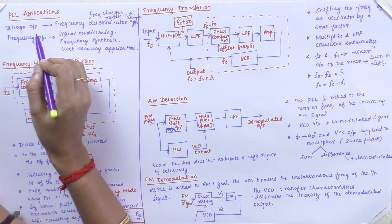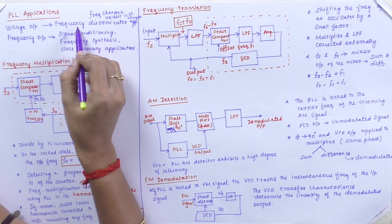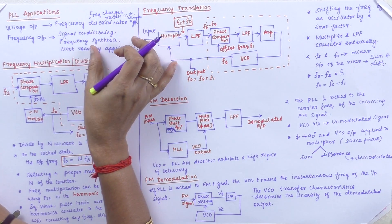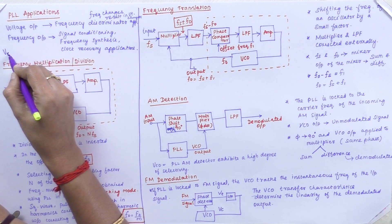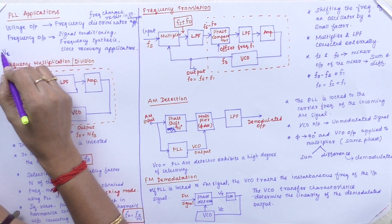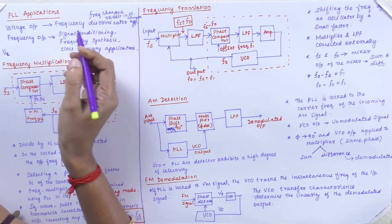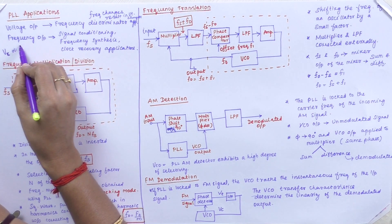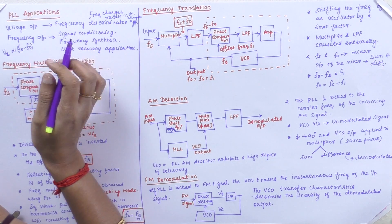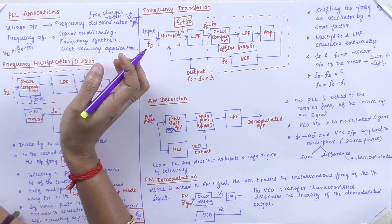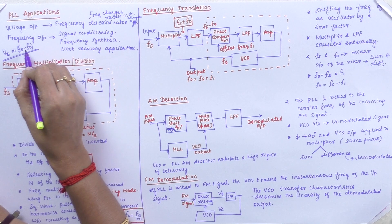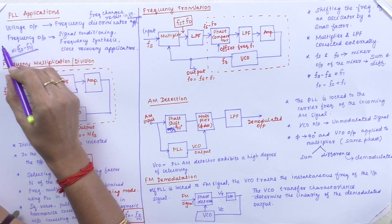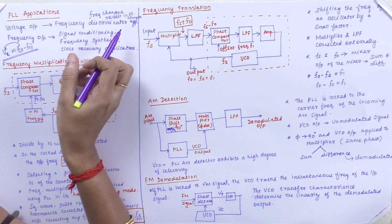When we consider voltage as the output, this is used in frequency discriminator applications. In the frequency discriminator application, the voltage output V-naught is the controlled voltage from the VCO. That controlled voltage is proportional to the frequency difference fs minus f-naught, because we eliminate the fs plus f-naught high frequency component using the low pass filter. So Vs is proportional to fs minus f-naught — if there is a change in frequency, it ultimately reflects in the voltage.